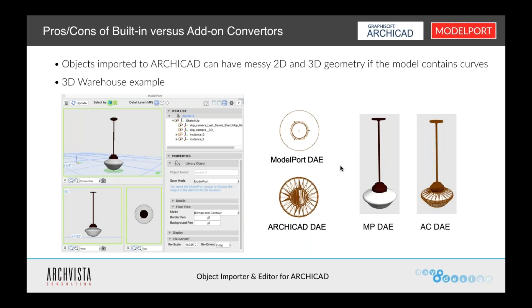And this is a big deal. When you need to bring in objects from other sources, it can get really cumbersome when you have to go through the process of doing a lot of editing to the 2D graphic. Even if it has no curves, it can still bring in extra miscellaneous lines, but particularly when it has curves, it really starts to muddy up the graphics on both the 2D and 3D sides.